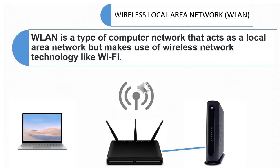Next is Wireless Local Area Network. WLAN is a type of computer network that acts as a local area network but makes use of wireless network technology like Wi-Fi. This network doesn't allow devices to communicate over physical cables like in LAN, but allows devices to communicate wirelessly.